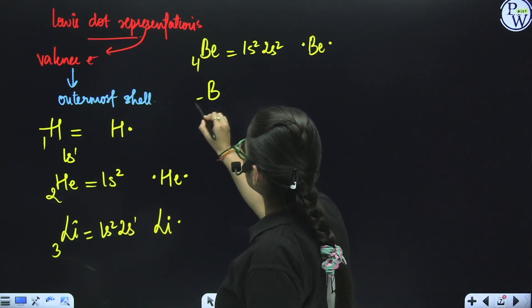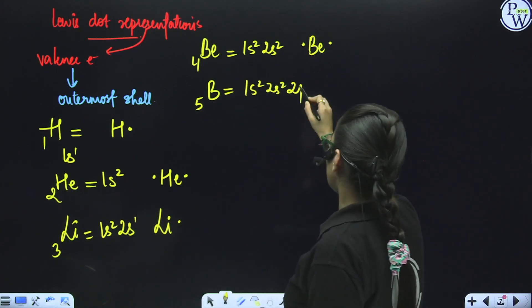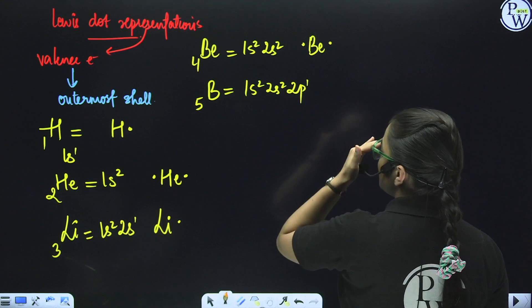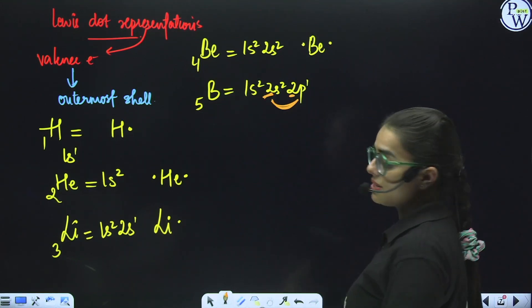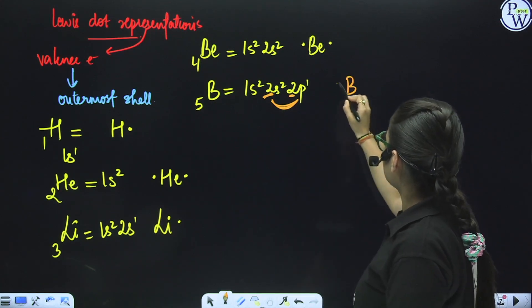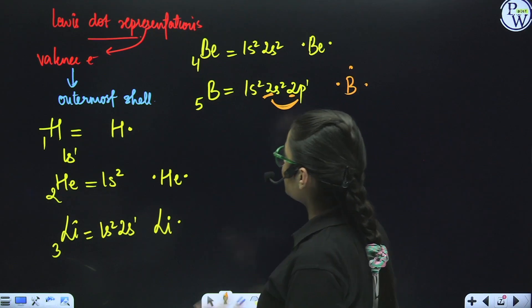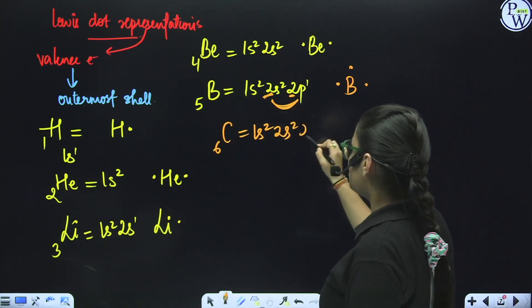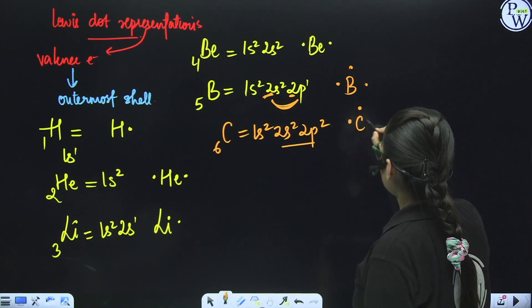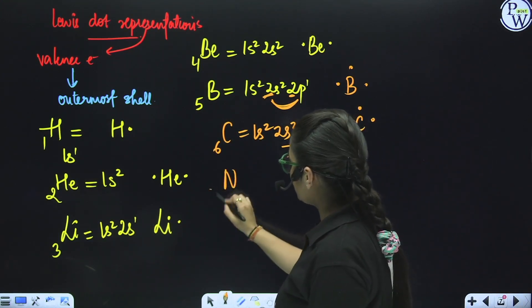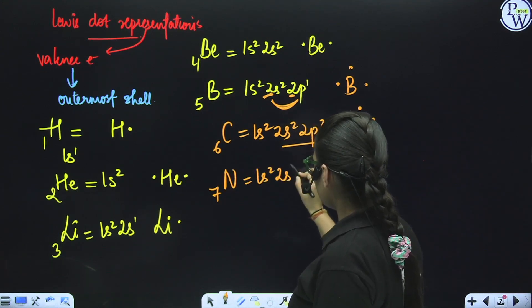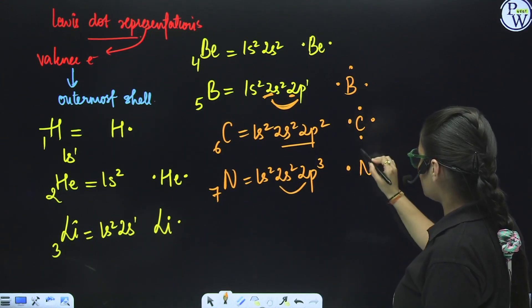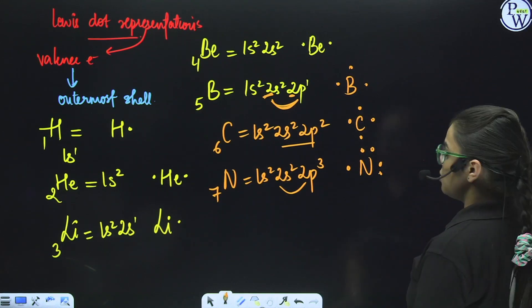Boron (atomic number 5, 1s², 2s², 2p¹): the outermost shell is the second shell holding 2+1 = 3 electrons, so boron is represented with three dots. Carbon (atomic number 6, 1s², 2s², 2p²): four electrons in the outermost shell. Nitrogen (atomic number 7, 1s², 2s², 2p³): five electrons — 2+3=5, represented with five dots. This is how Lewis dot representation is done for elements.